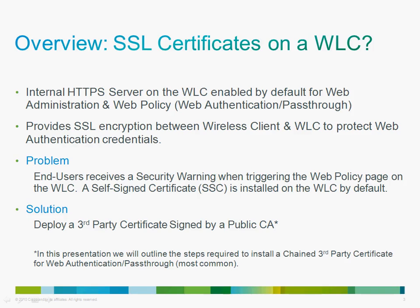Our solution is to deploy a third-party certificate signed by a public certificate authority. In that case, the end user will have a seamless experience as that certificate signed by a public CA will be able to validate against a root certificate installed on the client's machine. In this presentation, we're going to outline the steps required to install a third-party chain certificate for web authentication and web pass-through, which is the most common.